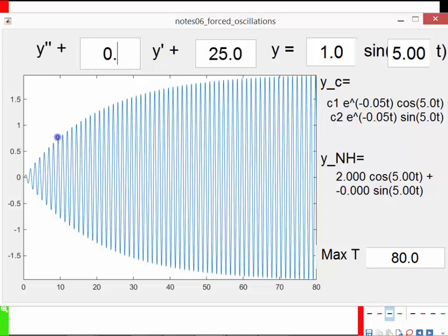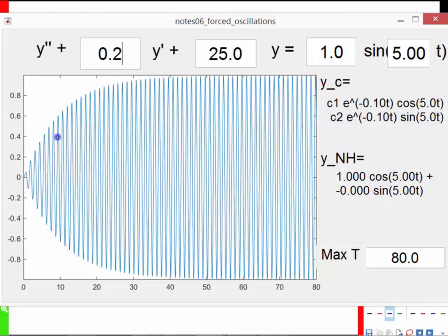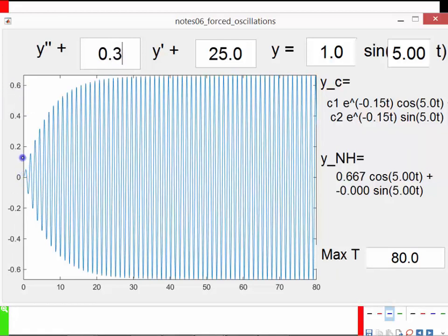What happens if we dial up the friction some more? Well, like you'd expect, we'd get less strong response, more energy bleed. Notice the amplitude here is only 0.6, but we still see that capping of the amplitude, so it grows fairly quickly and then sort of plateaus.